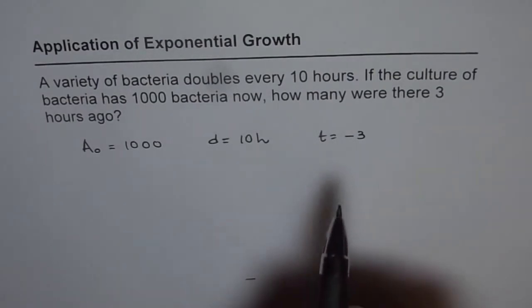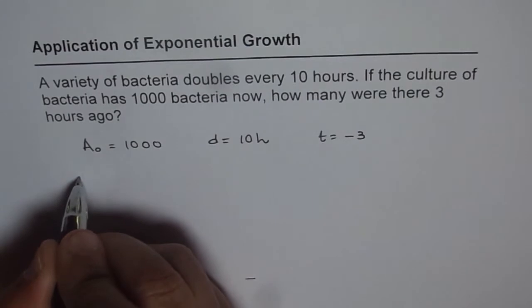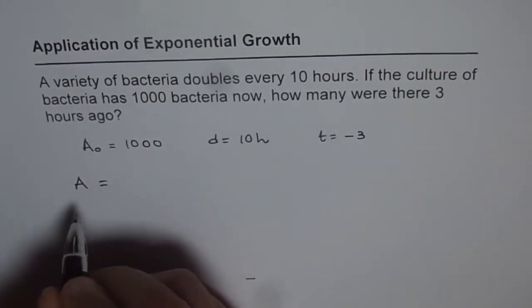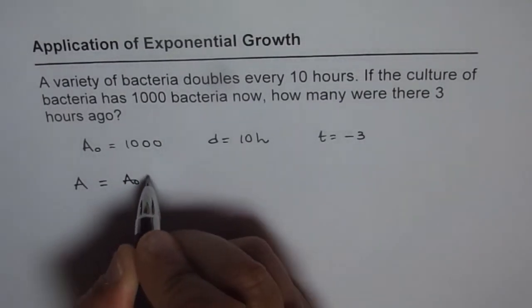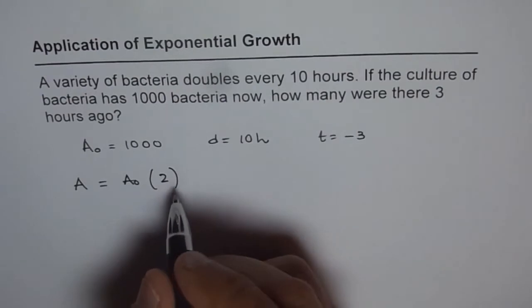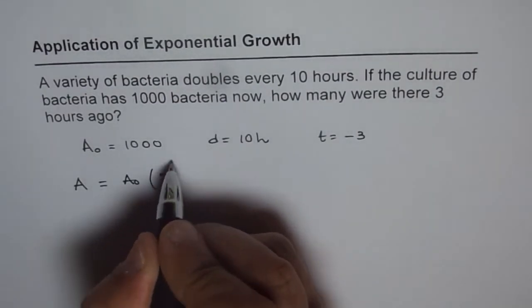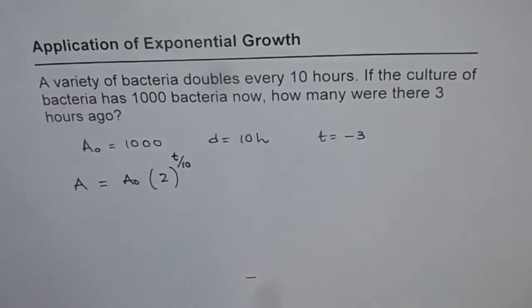Since we know the doubling period which is 10 hours, we can write the amount at any instance of time as initial number of bacteria times 2 to the power of T over 10. That becomes the formula.